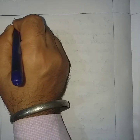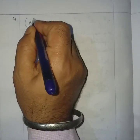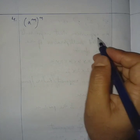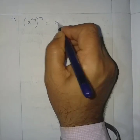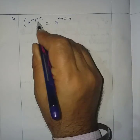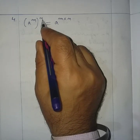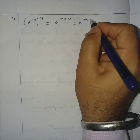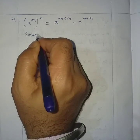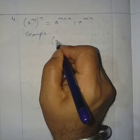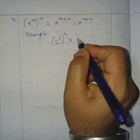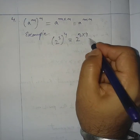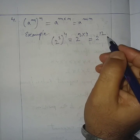Law number 4 — laws of indices: (a^m)^n = a^(m×n). That is, a to the power m, whole to the power n, equals a to the power m times n. Example: (2^3)^4 = 2^(3×4) = 2^12.